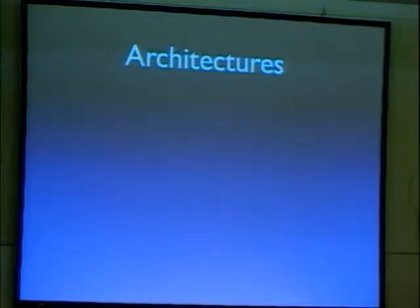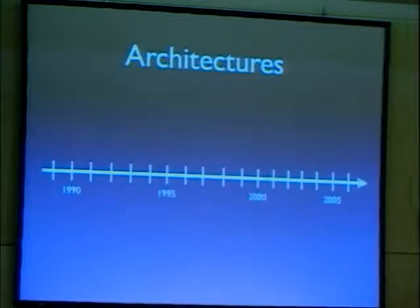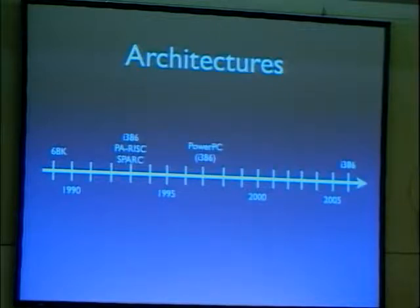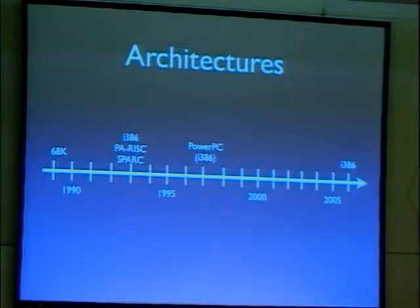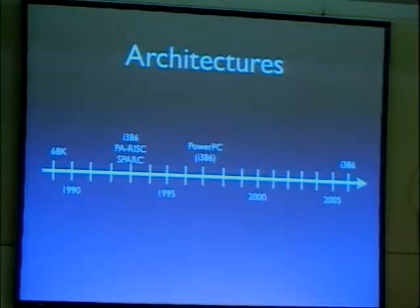NeXTSTEP and Mac OS X have been available for multiple architectures: they started as a 68K OS, were ported to i386, PA-RISC, and SPARC, then ported to PowerPC by Apple. Although an i386 version always existed and was released as part of Darwin, it was not part of a consumer product until 2006. So no i386 NeXTSTEP or Mac OS X consumer product was available between 1997 and 2006 — just the open-source Darwin parts.